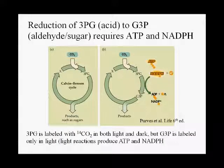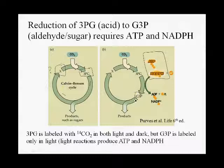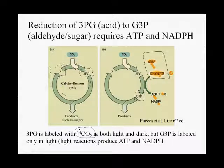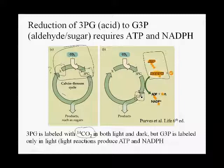This diagram summarizes their hypothesis. First, it's a cycle. There's some compound X, still unidentified, which combines with CO2 to form 3-phosphoglycerate. ATP and NADPH produced by the light reactions then convert 3-phosphoglycerate to glyceraldehyde-3-phosphate. They found that 3-phosphoglycerate becomes labeled with radioactive CO2 in both light and dark, so the reaction of X plus CO2 forming 3-phosphoglycerate doesn't actually require light. However, going from 3-phosphoglycerate to glyceraldehyde-3-phosphate requires light, since it requires the products of the light reactions.